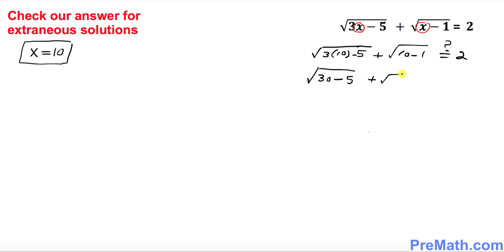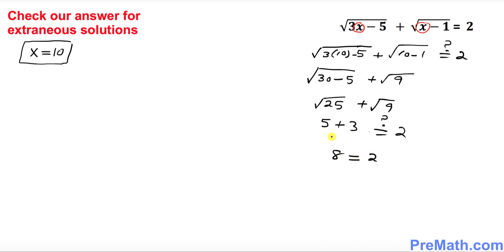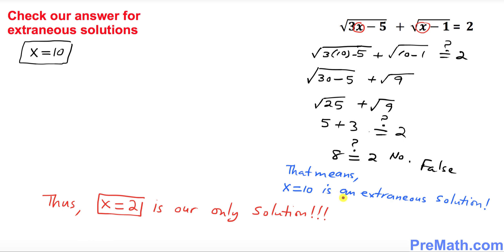So we get square root of 25 plus square root of 9, which is 5 plus 3 equals 8. But the right-hand side is 2. Is 8 equal to 2? No — this statement is false. Therefore x equals 10 is an extraneous solution. Our final conclusion is that x equals 2 is the only solution. Thanks for watching and please subscribe to my channel for more!